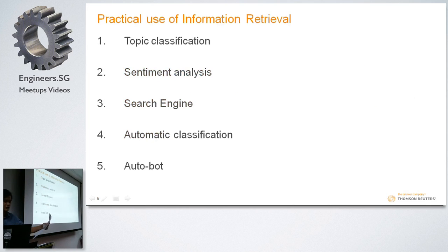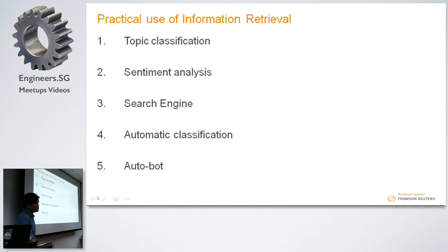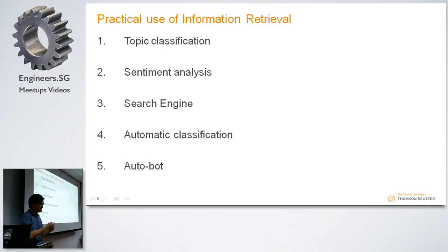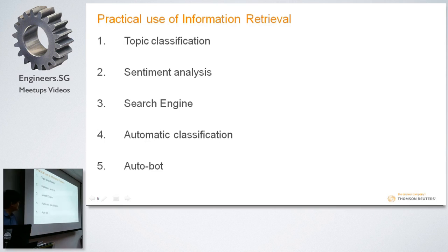What are the practical uses of information retrieval? You have topic classification, sentiment analysis, search engines, page ranks, automatic classification, automatic summary. You have Flipboard, which is a very popular app on your iPad and iPhone, and Autobot, which is a recent phenomenon — it's like a chat machine that's recently become very popular in the fintech industry.